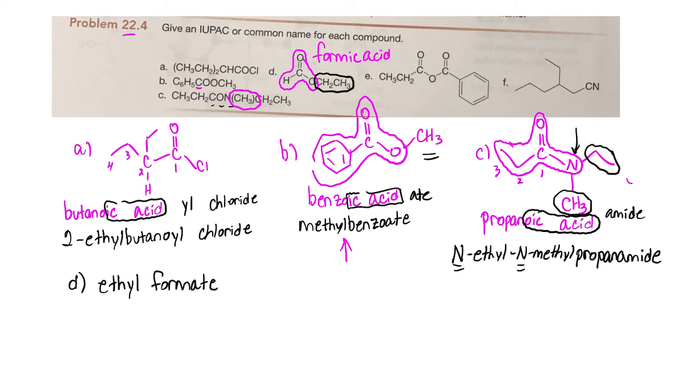In part E, we have an anhydride functional group. Here's the anhydride here. Now this is unsymmetrical—we have two different parts. So we need to think about what is the acid on the left. It's got one, two, three—so that's propanoic acid.